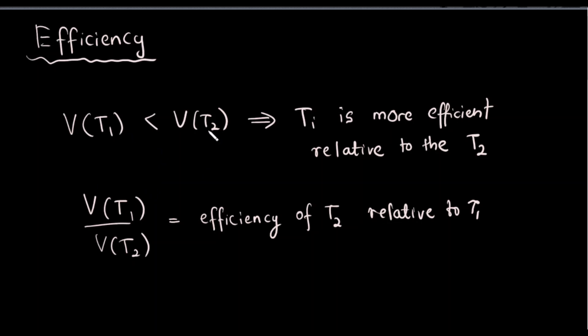We are going to call the Unbiased Estimators. We will call the variance. So, if we call T1 or T2, it will involve the Unbiased Estimators and their variance. If we are comparing Unbiased Estimators, we are going to call the minimum variance in the estimator.